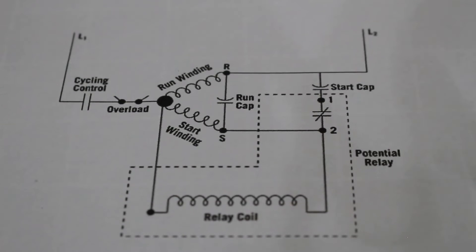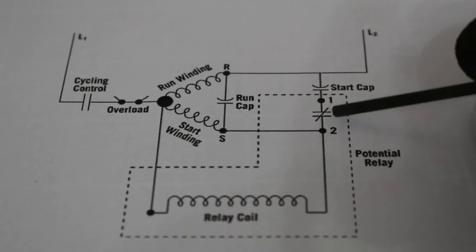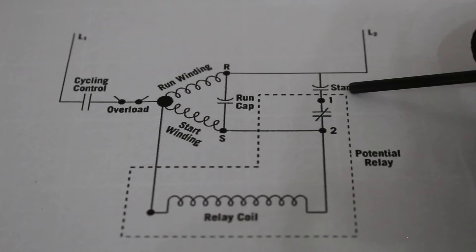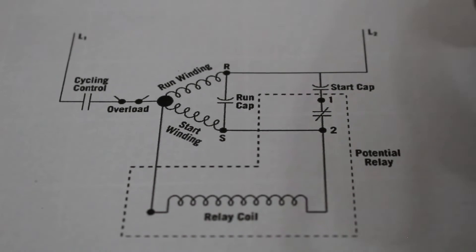The potential relay is not like other relays. Definitely not your basic control relay. It has a specific purpose, and the main goal is to help this system start by allowing the flow of electricity to your start cap. But once your compressor is up to speed, we want to remove the start cap from the circuit. So, let's go over.